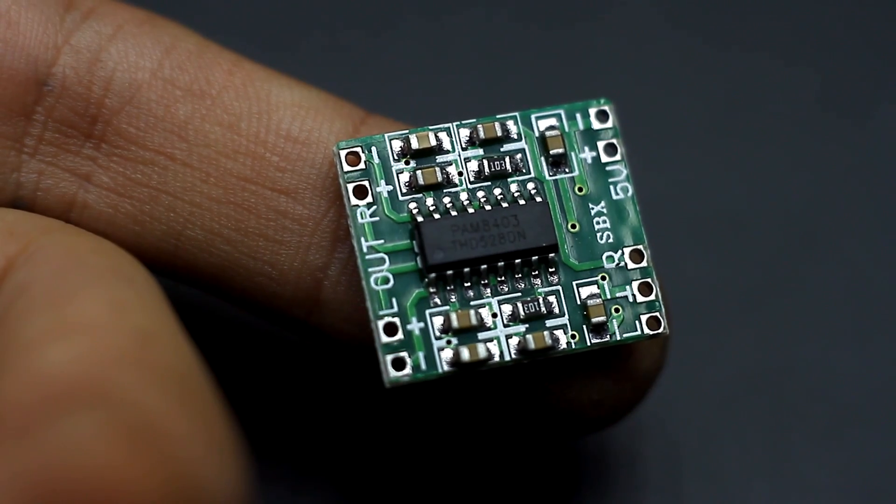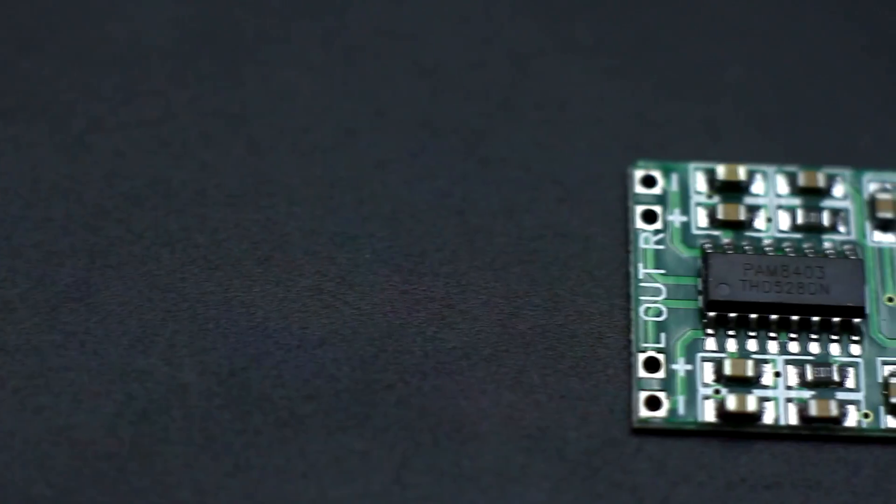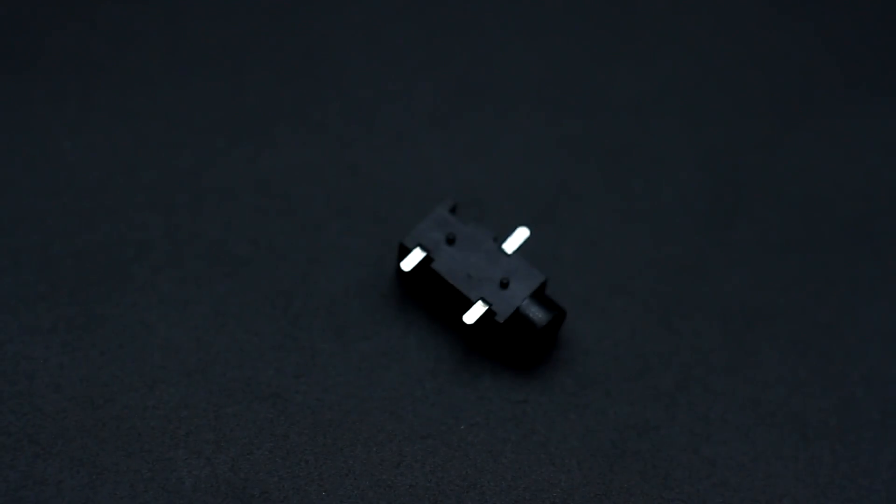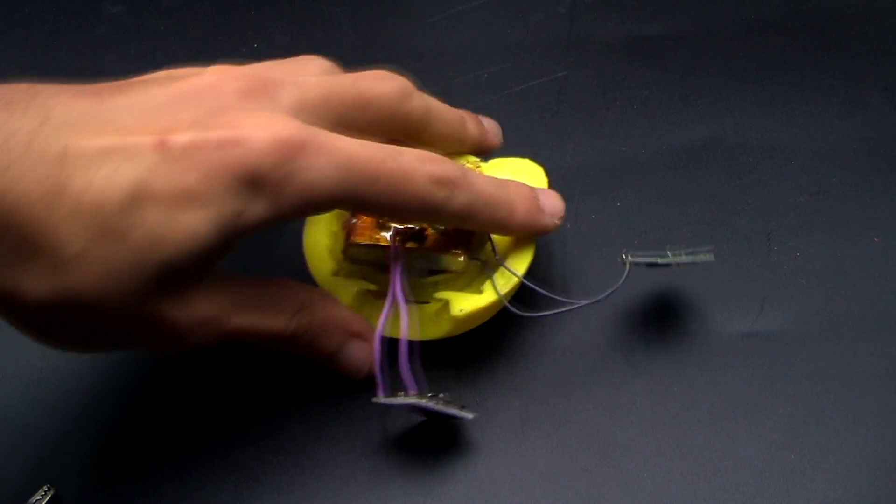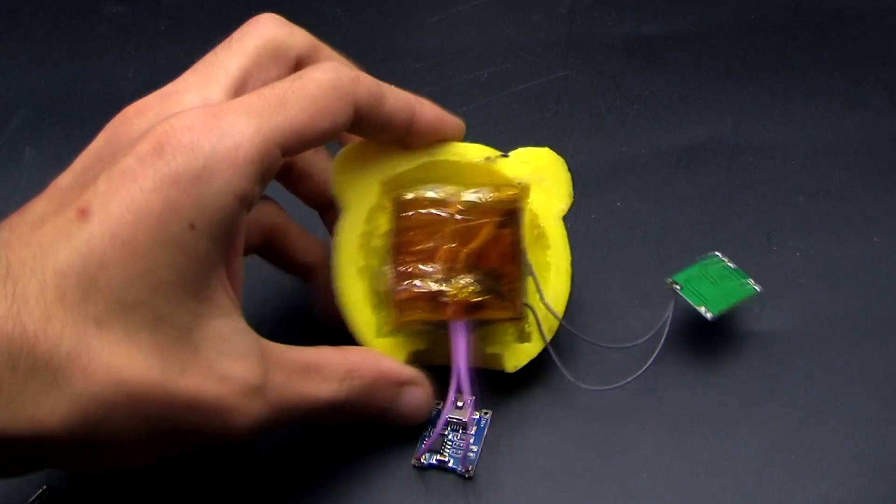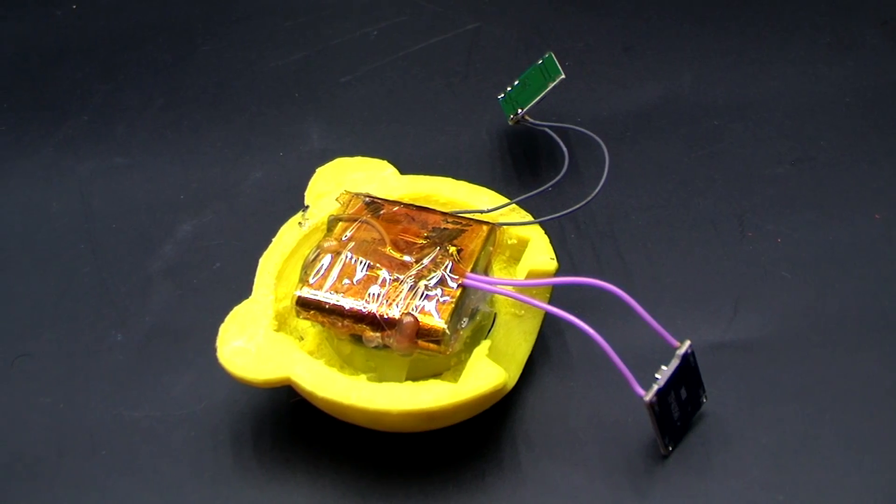As I already said, the amplifier is 2-channel, but one channel is involved yet. The same can be said about the 3.5 mm input connector. All electronics are located in the big head of a bear. Almost everything is fixed with hot glue.